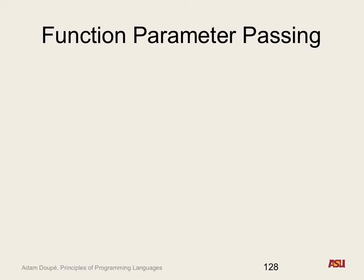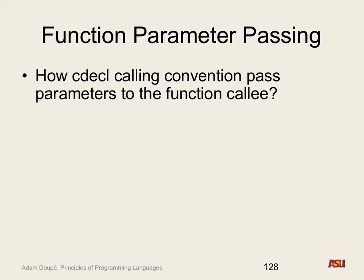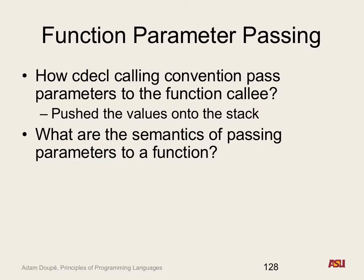So we talked about calling convention. We looked very briefly at how parameters were passed into our functions. In the CDECL calling convention that we just studied, how did a calling function pass parameters to the callee? Put it on the stack — push it on the stack. And what did it actually push? It copied that value and pushed it onto the stack, giving us essentially a new copy of that value on the stack.